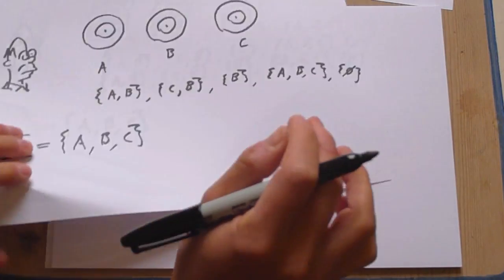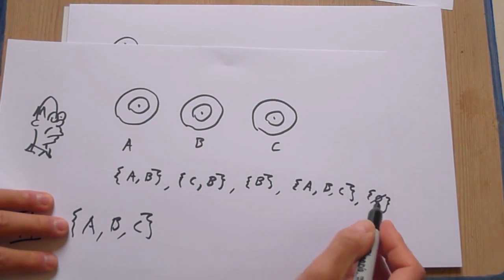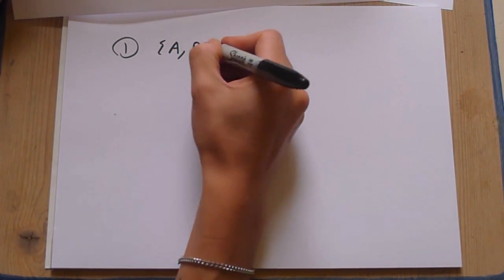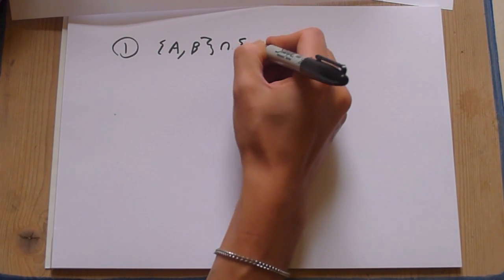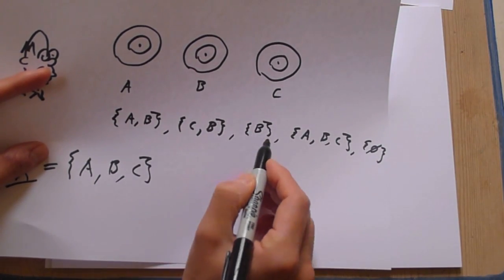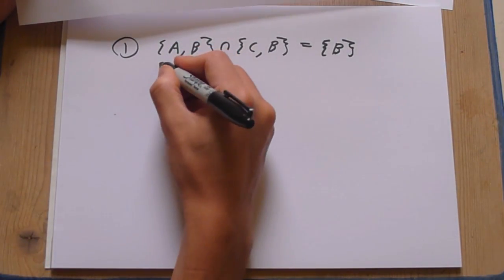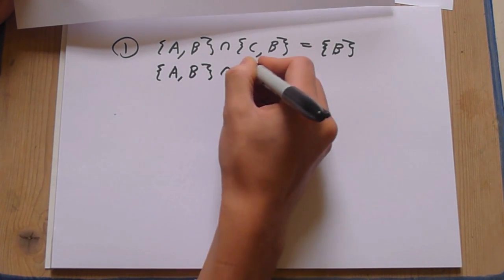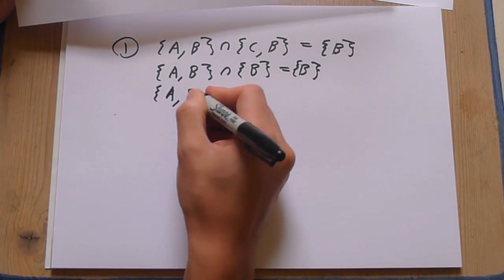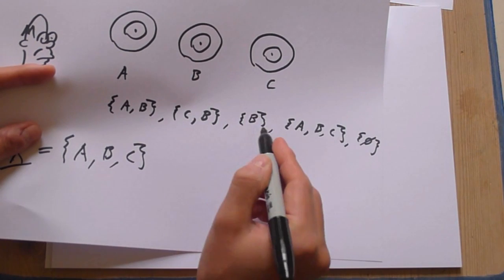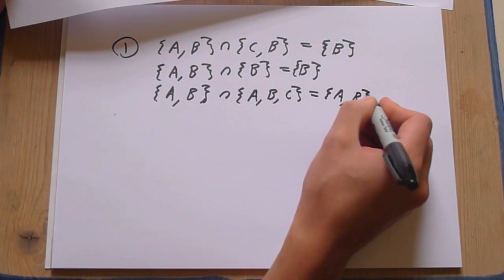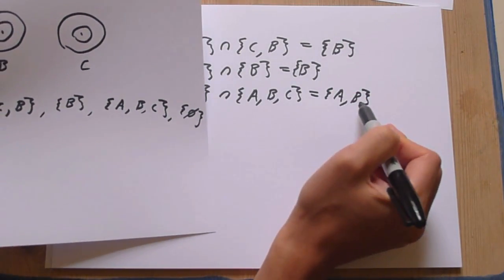Let's check that. The first requirement was that if you intersect any two open sets, you get another open set. Okay, so let's take the intersection of A, B with C, B. Well, that just gives us B, and that's this open set here. What if we take A, B, intersection with B. Well, that's just B. A, B, intersection with this guy. That just gives us A, B. Well, look at these sets, B, B, A, B.